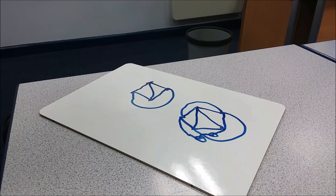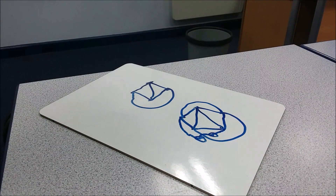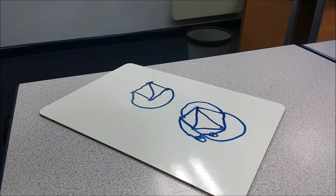One thing which starts to get a bit mind-melting is if you start working with double toruses — ones with two holes — and then upwards: three holes, four holes, and so on. Trying to find the new number of points we can connect up gets quite hard to imagine.